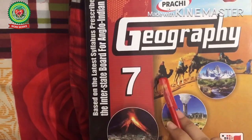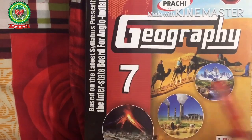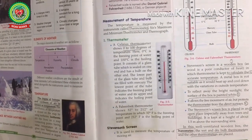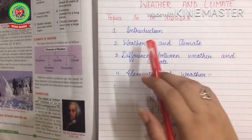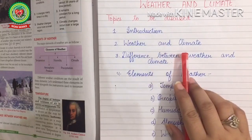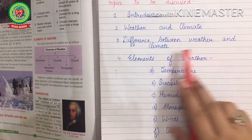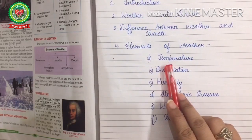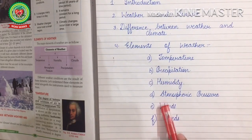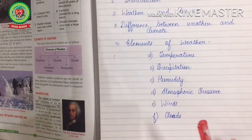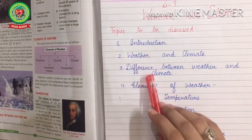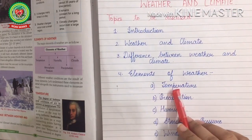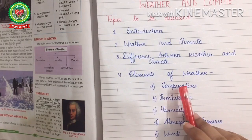Good morning students. Take out your geography book, class 7. Yesterday we started with the new lesson — lesson number three: Weather and Climate. The topics discussed are: introduction, weather and climate, difference between weather and climate, and elements of weather — temperature, precipitation, humidity, atmospheric pressure, winds, and clouds. So far we have covered the introduction, weather and climate, difference between weather and climate, and elements of weather, starting with temperature. Today we will discuss an instrument used to measure temperature.